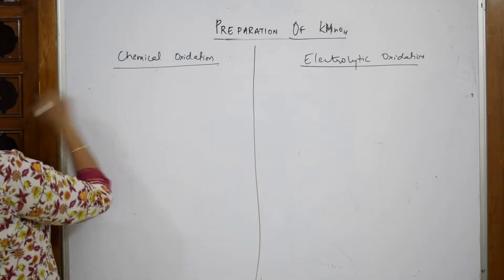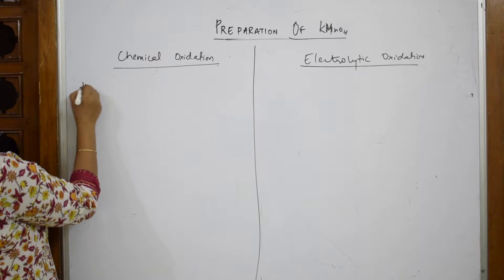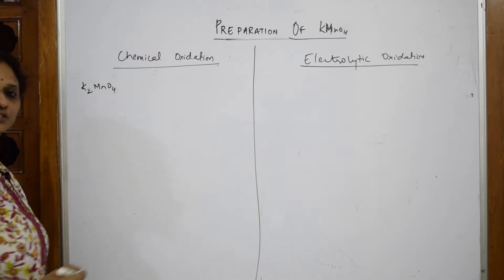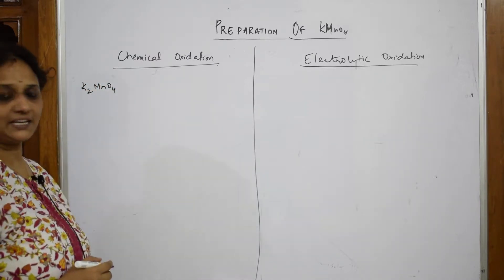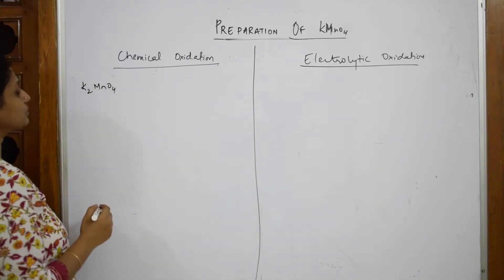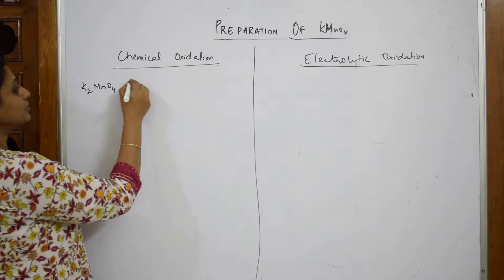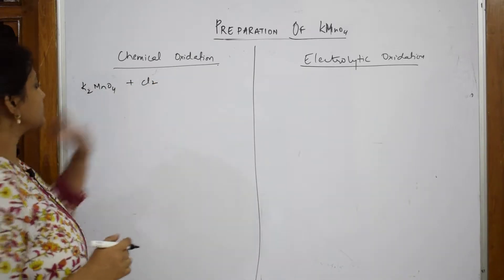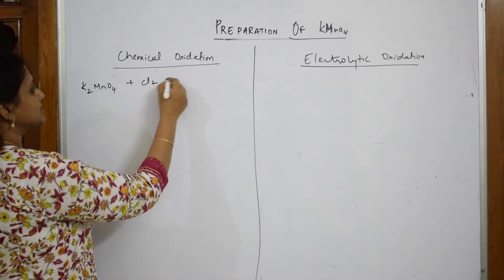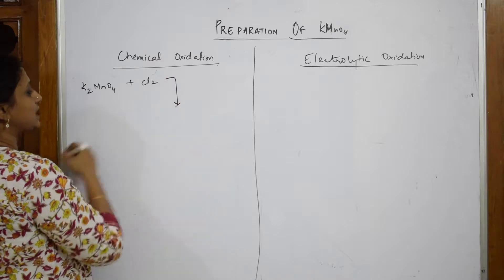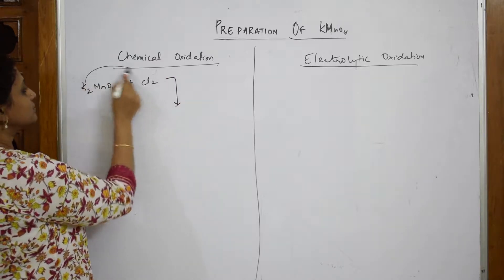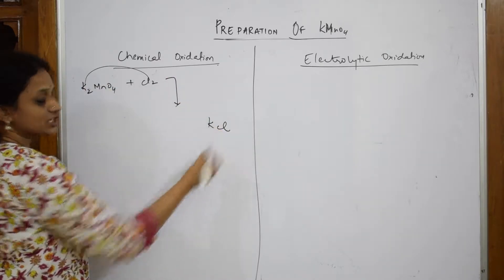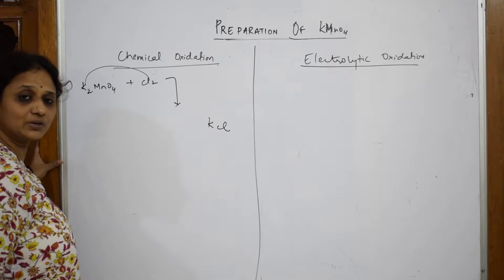In chemical oxidation, I am going to take K2MnO4 — that is potassium manganate — and I am going to introduce chlorine gas to it. When I introduce chlorine gas, immediately chlorine comes out and precipitates as potassium chloride salt.